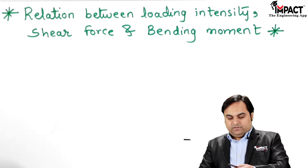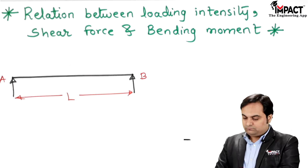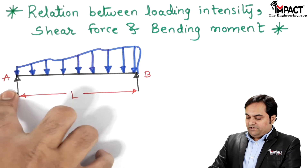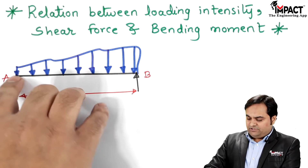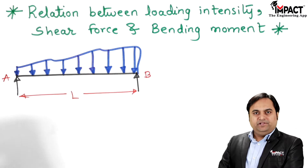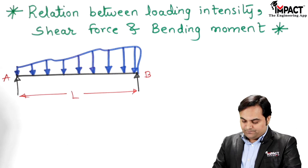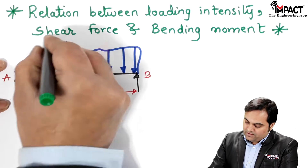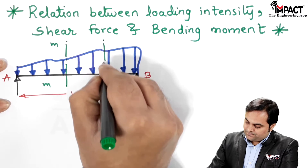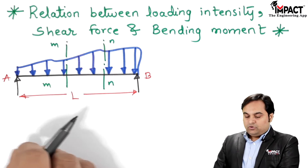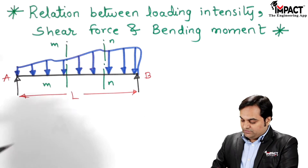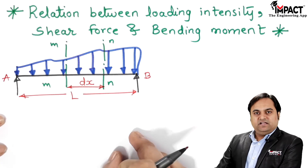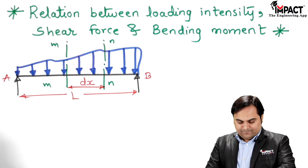I'll first draw a simple diagram. Here is a simply supported beam supported at A and B; the length of the beam is capital L. It is subjected to a generalized loading, meaning the type of loading is not yet specified. I will take two sections on this beam: section MM and section NN, with the distance between these two sections being DX. By taking this small elemental distance DX, I am going to analyze the entire beam.